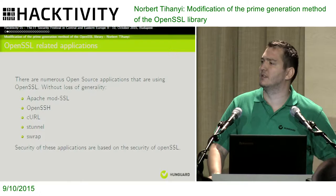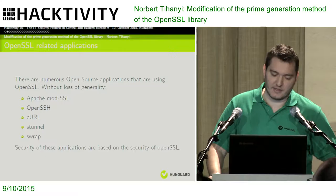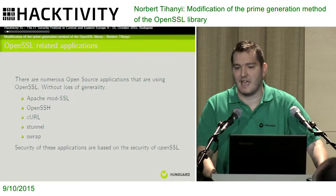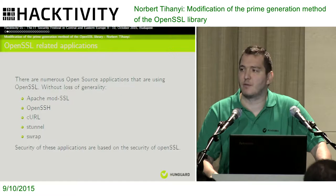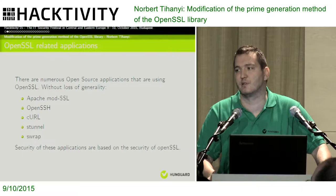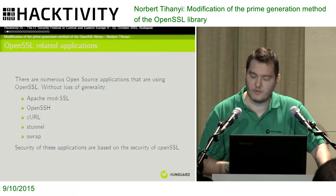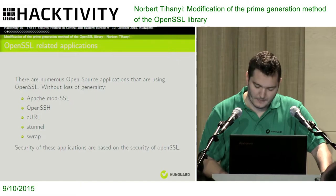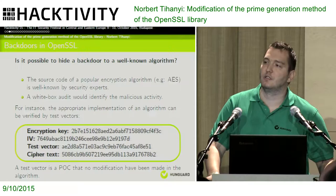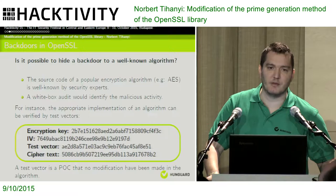As you know, there are a number of open source applications that use the OpenSSL library — for example OpenSSH, Curl, Stunnel. All of these applications rely on the security of OpenSSL. So it means if you can implement backdoors in this library, there is a chance to hide them. The main question I'm trying to show in my presentation is: is it possible to hide backdoors in a well-known algorithm?